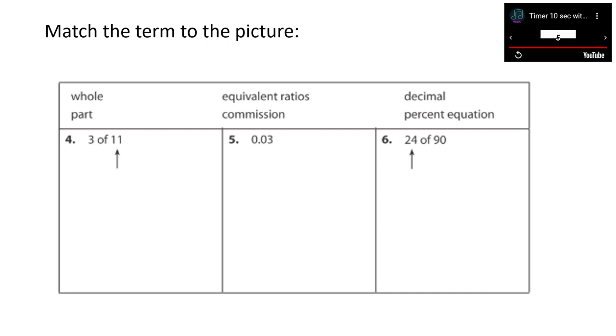So, if you look at the percent of 11, 11 represents the whole. So, remember, in the percent equation, part times whole equals percent. So, 3 of 11 is that piece of the percent equation. Then, in number 5, 0.03 or three hundredths represents a decimal. If you multiply that decimal by 100, you would get percent or three percent. And then, 24 of 90, again, if you think of the percent equation, 24 represents the part. Part times the whole equals percent.